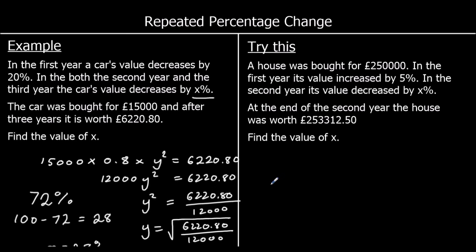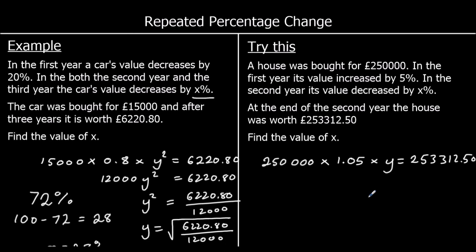A house was bought for £250,000. In the first year its value increased by 5%, so 100% plus 5% is 105%. In the second year its value decreased by some percentage, so we call that multiplier Y. At the end of the second year it's worth £253,312.50. What we've got to do is divide £253,312.50 by 250,000 times 1.05.